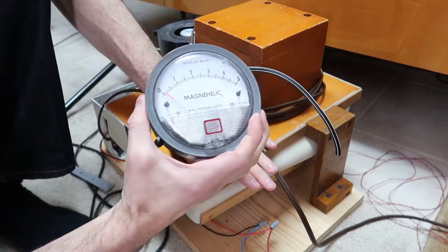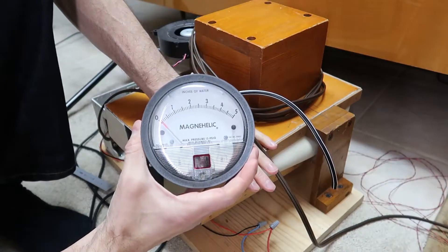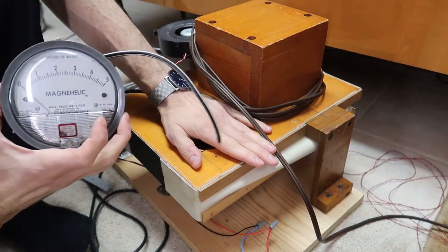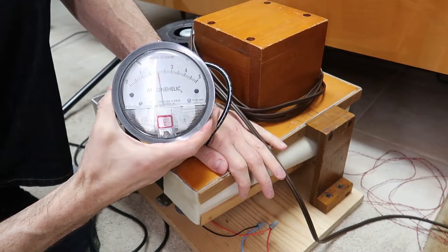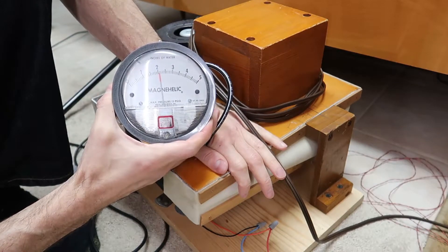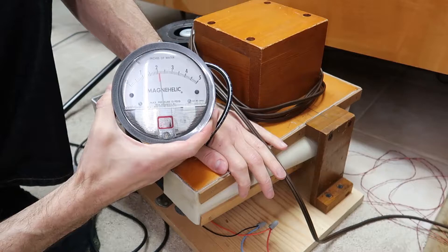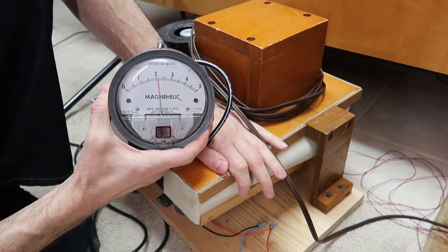So here's how we can measure the pressure. This is a magnehelic gauge and we can stick that right in here, and we see we're getting just over two inches, maybe even 2.2 inches of wind pressure according to this gauge.